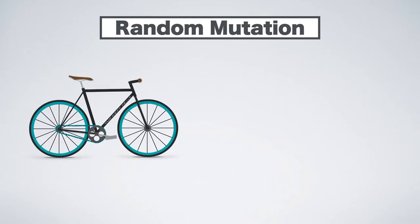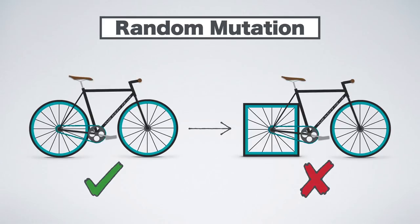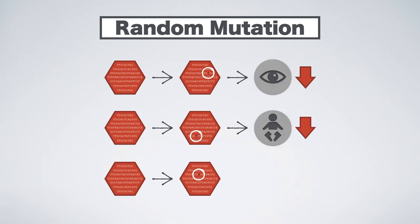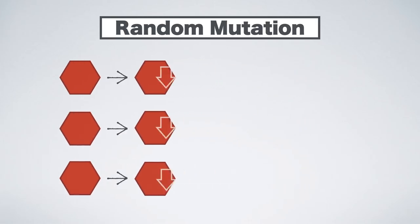If you make a random change to something that works really well, you are likely to end up with something that works less well. In fact, most random mutations produce bad results: slightly worse eyesight, slightly less fertility, slightly worse immune system, and so on.